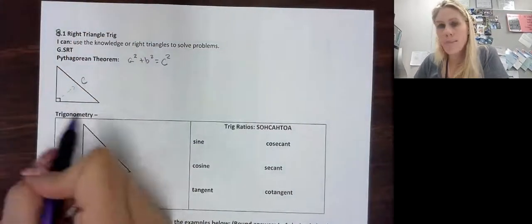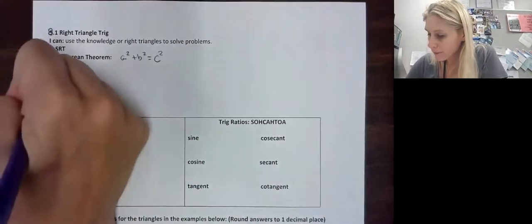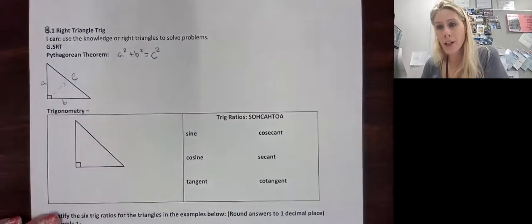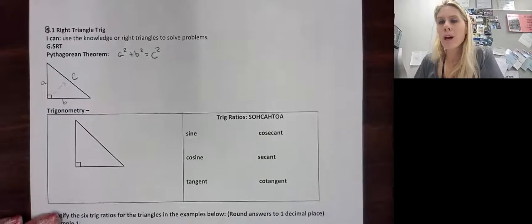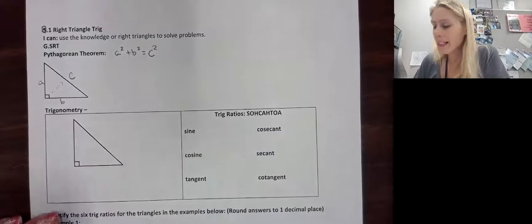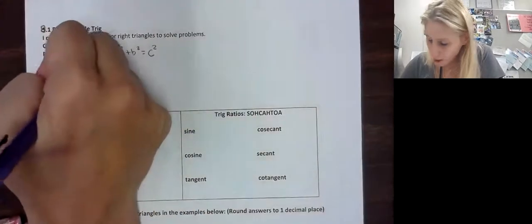Okay, so this is c. And the other two, it doesn't matter whether you say this one's a or this one's b, or this one's b and that one's a. For the Pythagorean theorem, the a and b are what we call the legs of our right triangle. And the longest side, c, is called the hypotenuse.